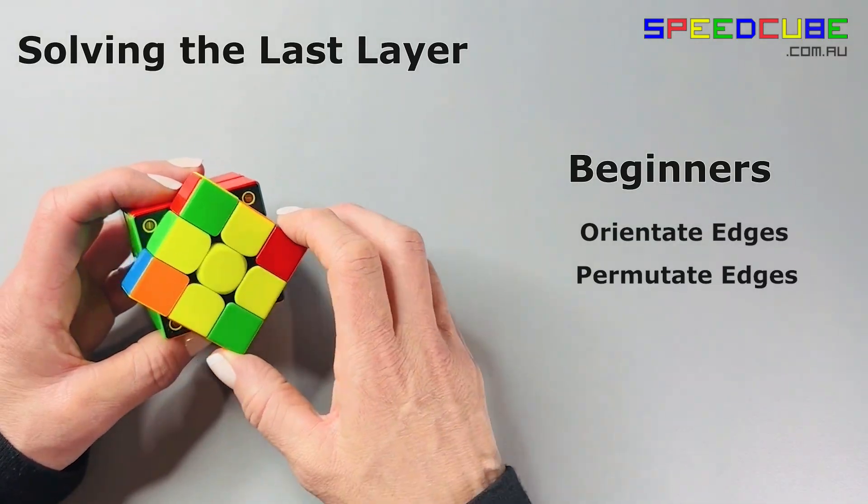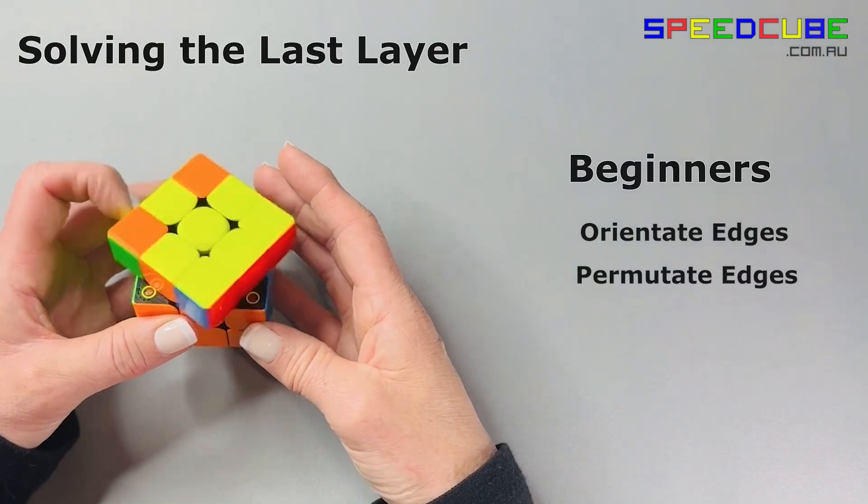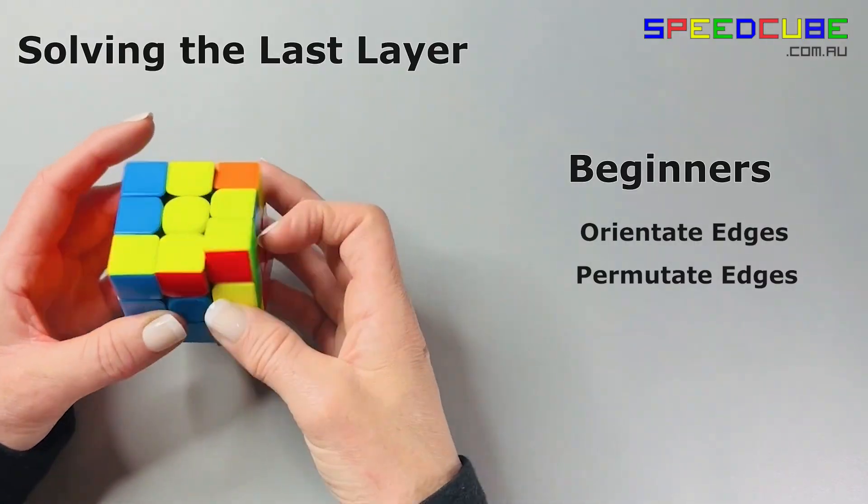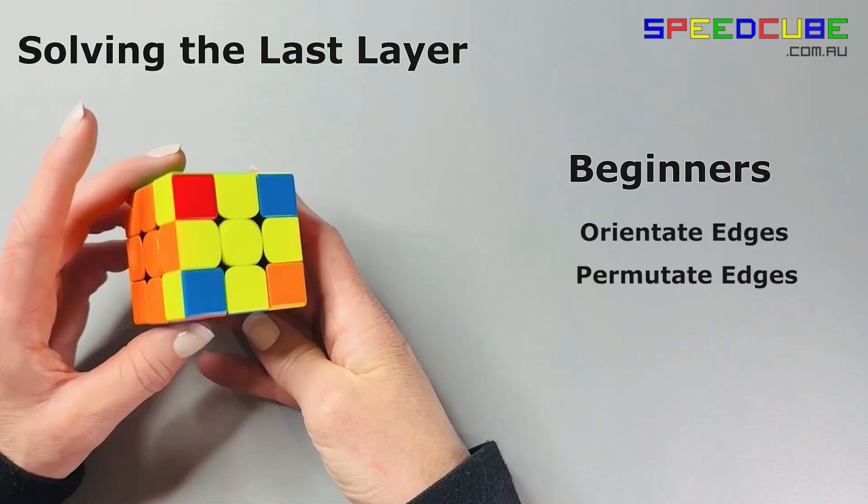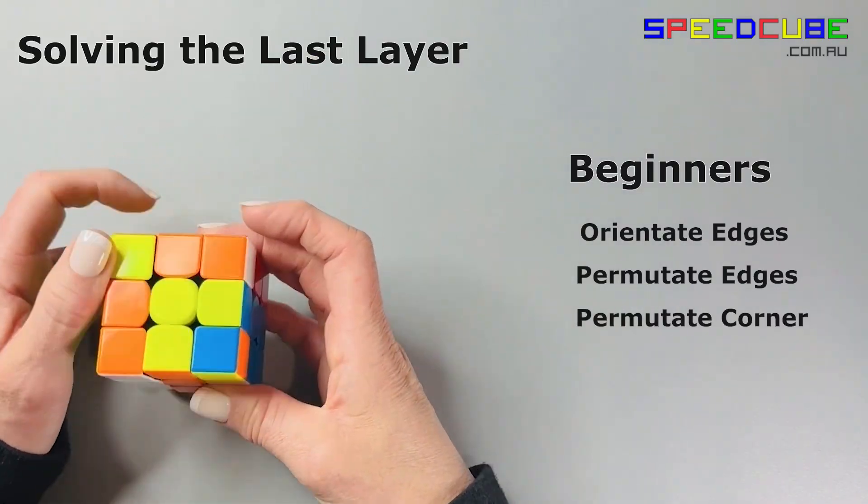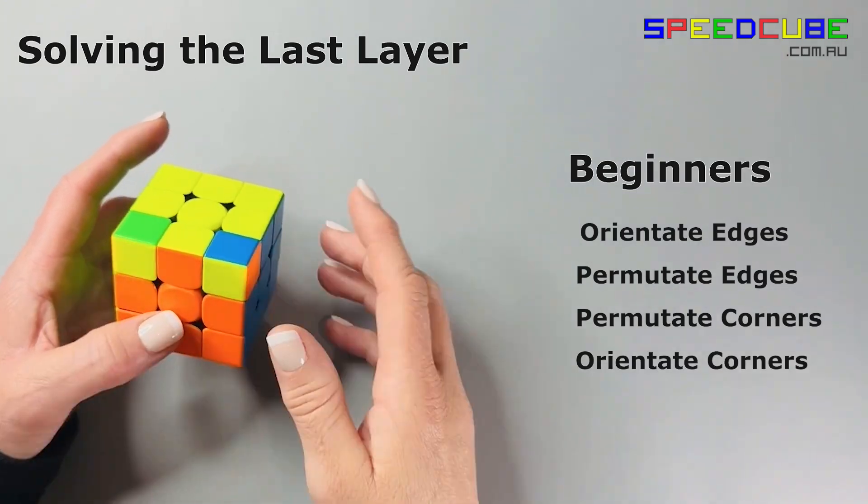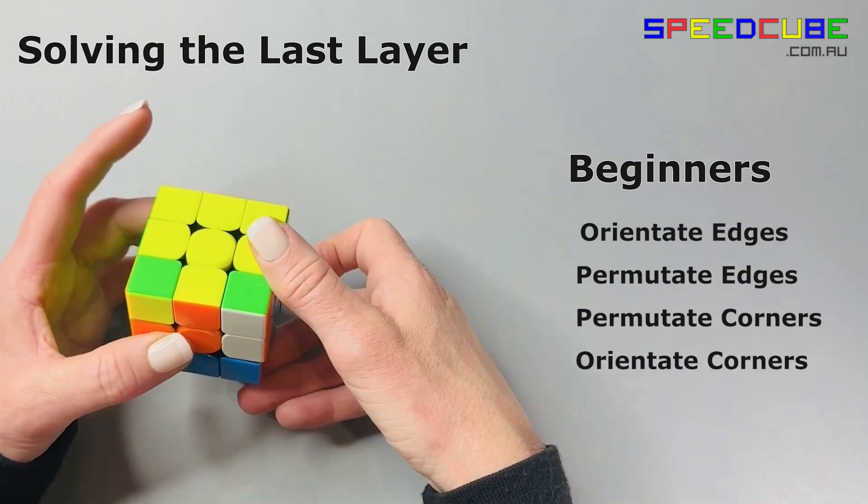Next, you move the edge pieces into their correct position. This is also called permutating the edges. Then you move the corners into their correct positions. And lastly, we rotate each corner so it's orientated correctly.